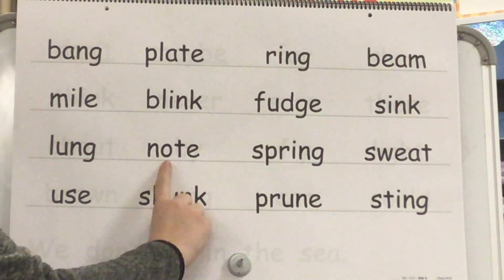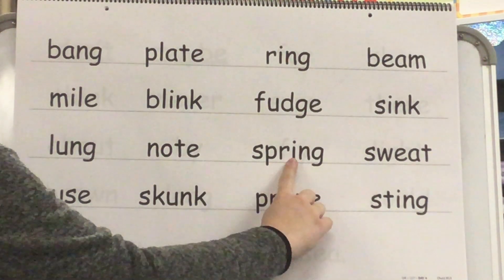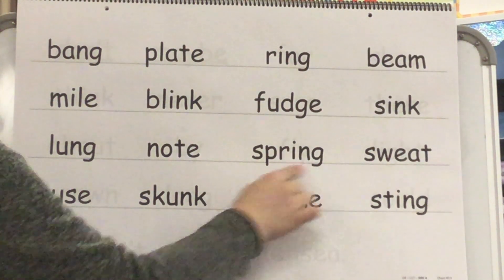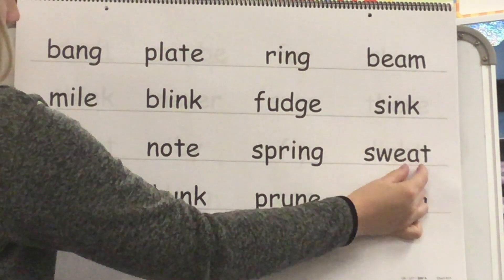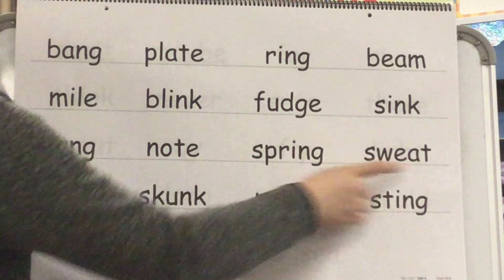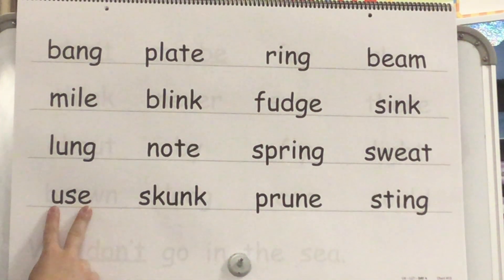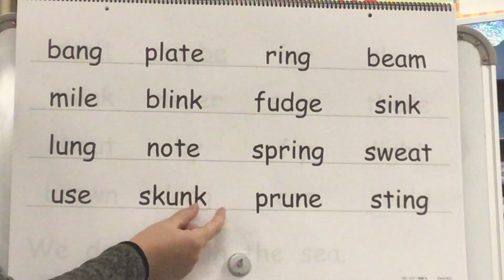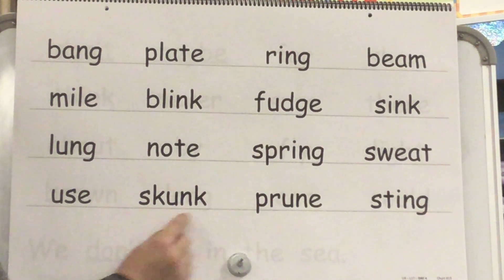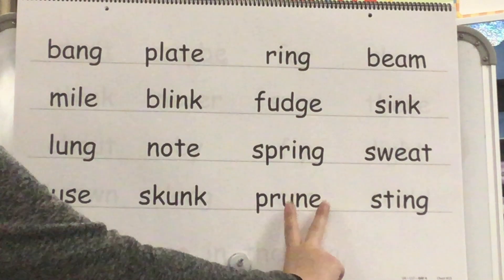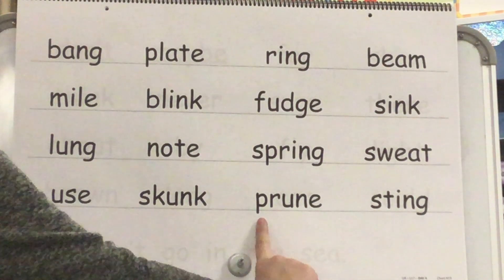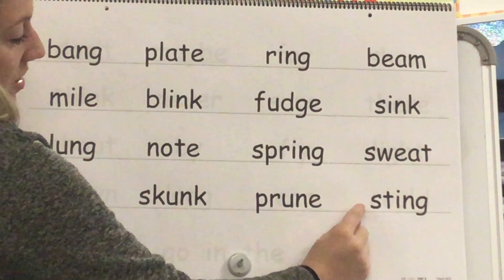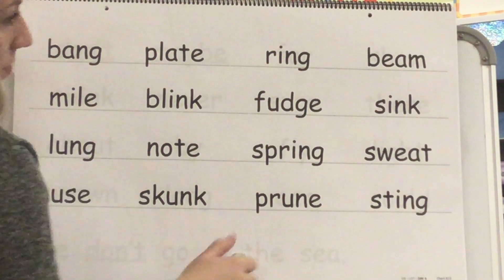Sound? O. Blend? Note. Word? Note. Sound? I. Sound? Nn. Blend? Spring. Word? Spring. Say A. Sound? A. Blend? S-u-et. Word? Sweat. Yes, sweat. Sound? U. Blend? Use. Word? Use. Sound? U. Sound? Nk. Blend? Sk-unk. Word? Skunk. Sound? U. Blend? Prune — smooth it out. Word? Prune. Yes, prune. Sound? I. Sound? Nk. Blend? St-ing. Word? Sting. Yes, sting.